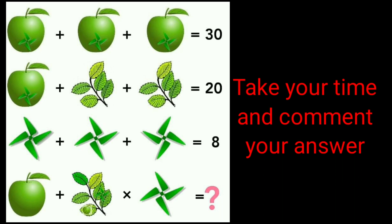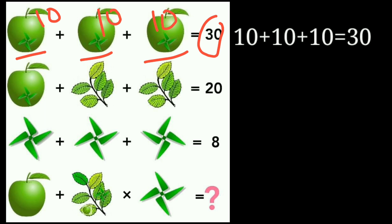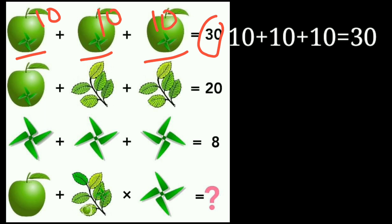If you see the first equation, there are three apples and a leaf fan. Three apple-plus-leaf-fans equal 30. This means the value of each apple-and-leaf-fan is 10 — this one is 10, this one is 10, and this one is 10. So 10 plus 10 plus 10 equals 30.